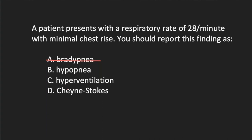Cheyne-Stokes breathing is a pattern of breathing, and that pattern changes. We see this in increasing intracranial pressure. So now we have hypopnea and hyperventilation. What is rapid, deep breathing? Hyperventilation. Is this breathing deep? No — it has minimal chest rise. Hyperventilation is rapid and deep. This person, with minimal chest rise and a rate of 28 a minute, is underventilating.